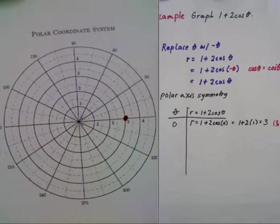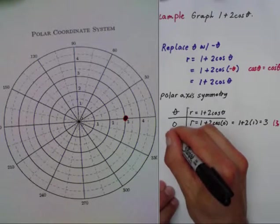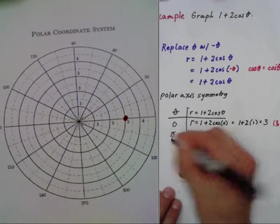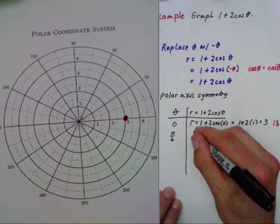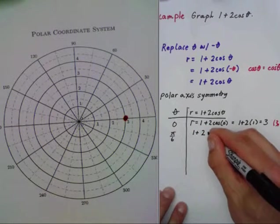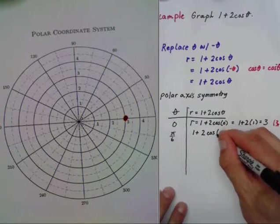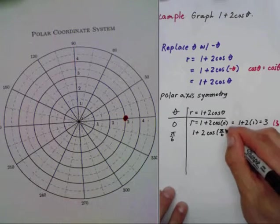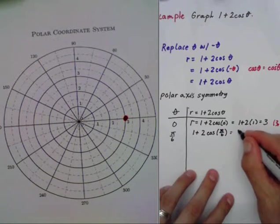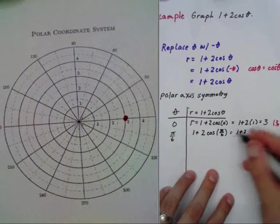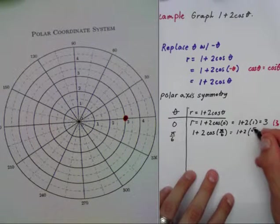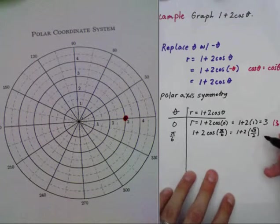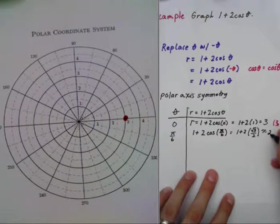Now I can try my other point. I'll put pi over six in. So r equals one plus two times cosine of pi over six, which equals one plus two times root three over two.